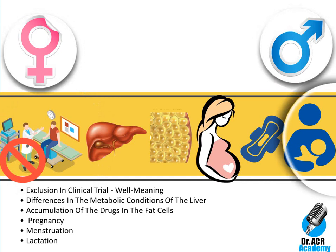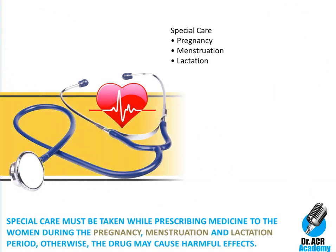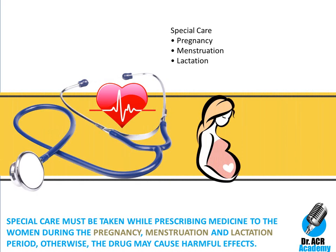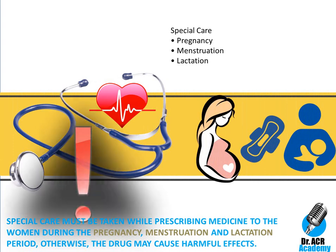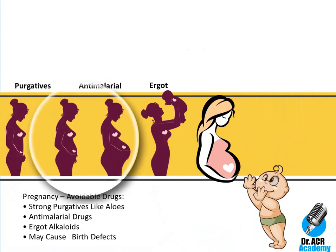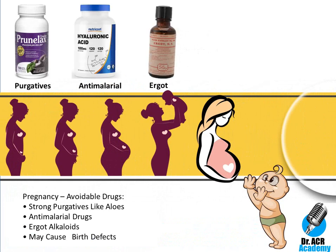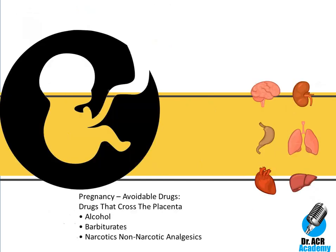Special care must be taken while prescribing medicine to women during pregnancy, menstruation and lactation, otherwise the drug may cause harmful effects. Drugs that must be avoided during pregnancy include strong purgatives like aloes, drugs that stimulate uterine smooth muscles like drastic purgatives, anti-malarial drugs, and ergot alkaloids that may cause birth defects. Drugs that cross the placenta, like alcohol, barbiturates, narcotics and non-narcotic analgesics, should also be avoided as they interfere with normal fetal development and damage the baby's organs.